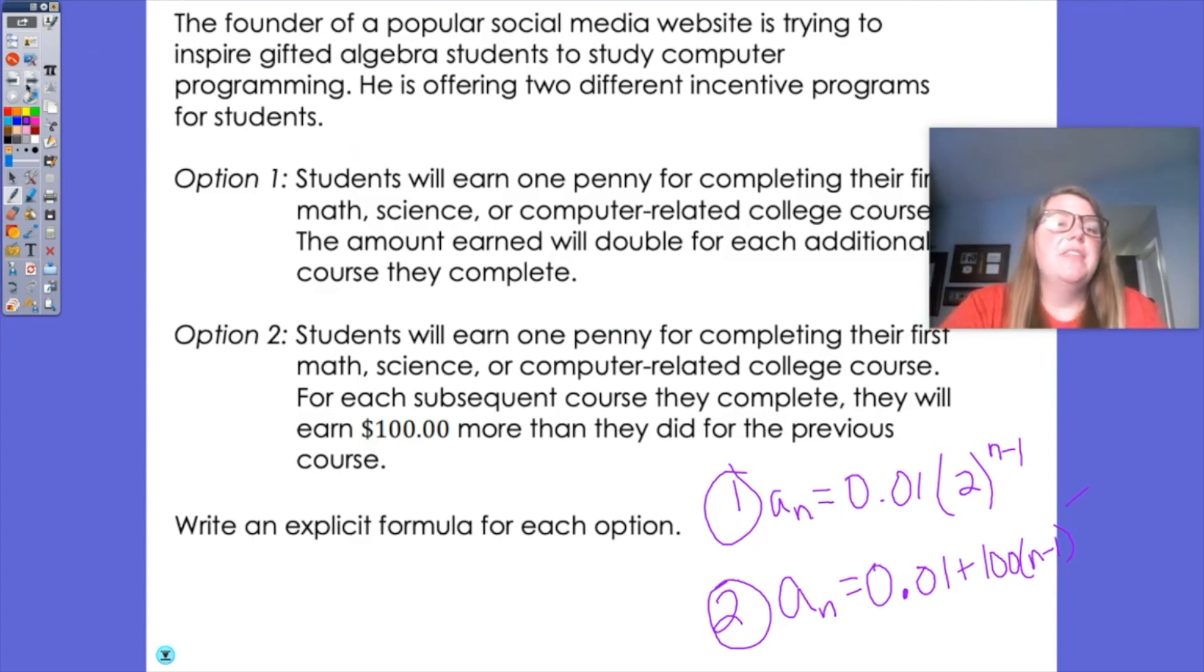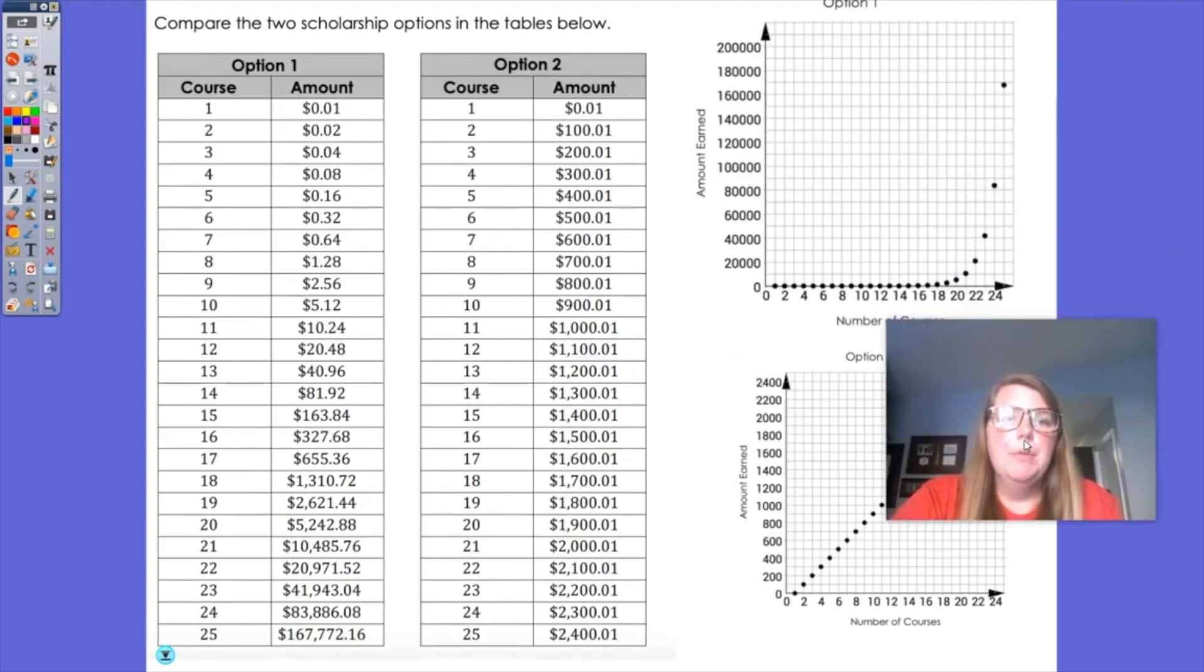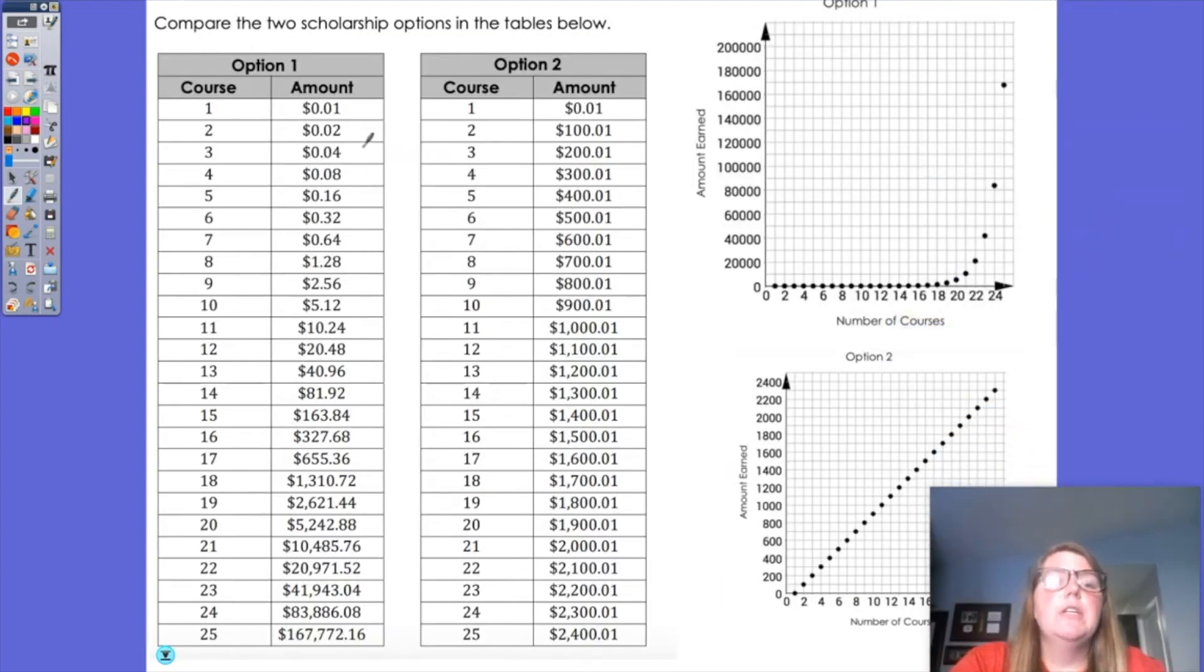So let's actually look at the difference between these two as far as a table and a graph. So you can see option number one, the table increases only by pennies. But once we get to, I think it happens at the 19th course, we are now ahead of all of the courses for our option number two. So it is multiplying by the same number each time, and you can see that exponential growth model for my graph, and option number two is a linear pattern. So if we were to choose option number one, I would make more money when I hit the 19th course.